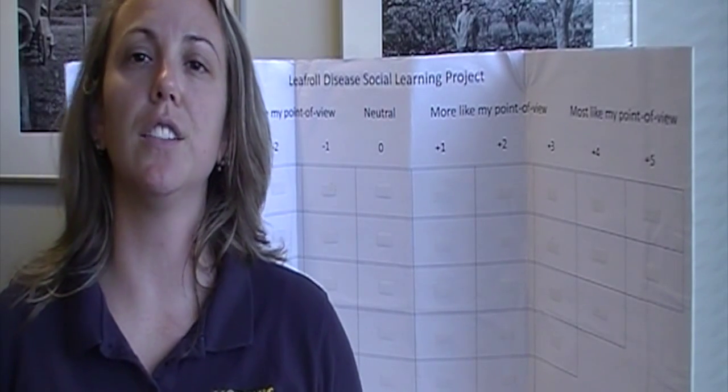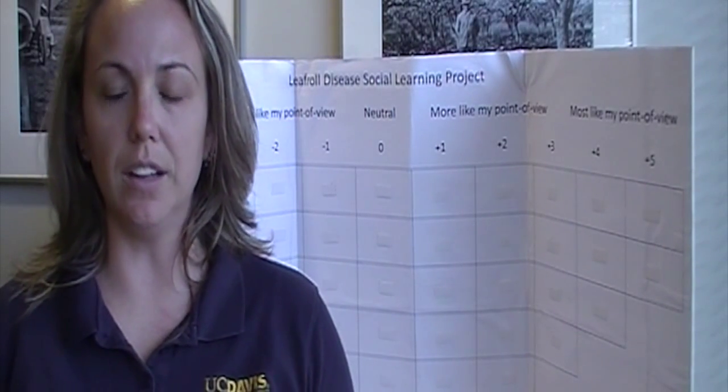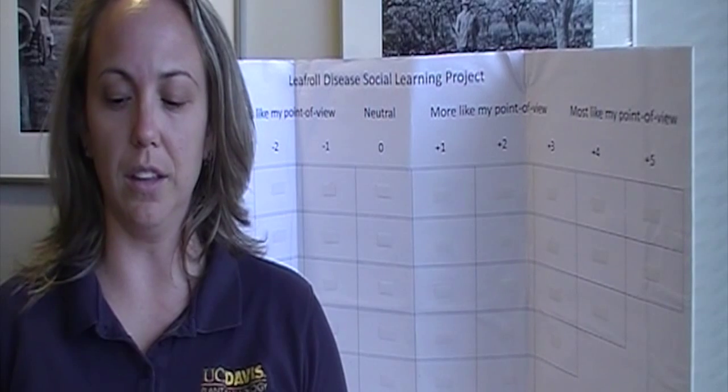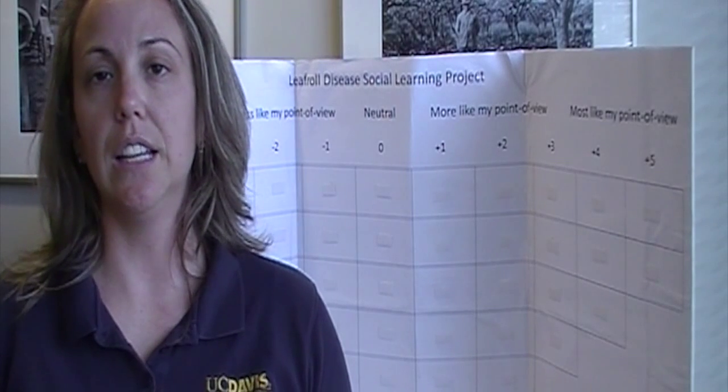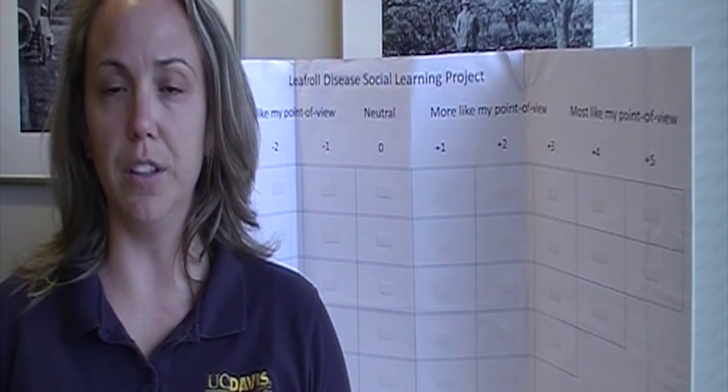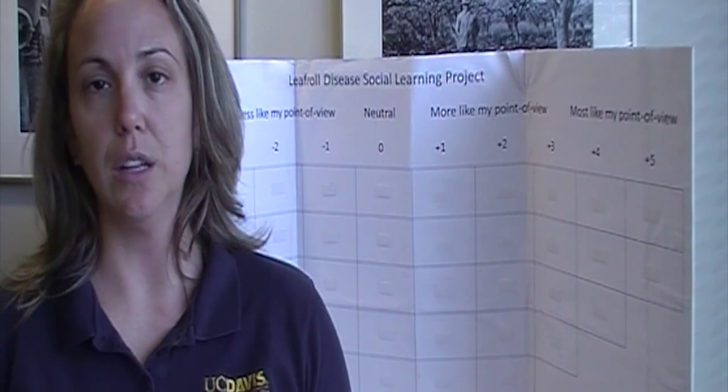Today we are here to discuss Q-Method. Q-Method is a research method used in psychology and in the social sciences to study people's subjectivity — that is, their viewpoint. It was developed by William Stevenson, who achieved his PhD in Physics in 1926 and a PhD in Psychology in 1929. He developed an alternative form of factor analysis, which is this: the Q-Method.